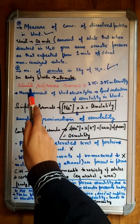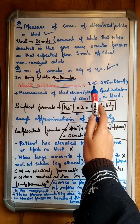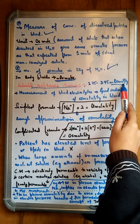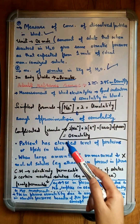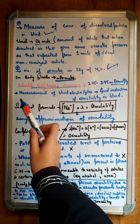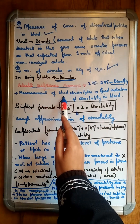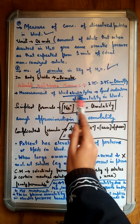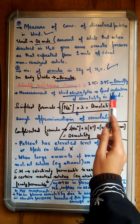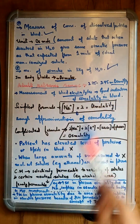The adult reference range for osmolality is between 275 to 295 milliosmoles per kg. We can say that measuring electrolytes in our blood can indicate the osmolality in blood.